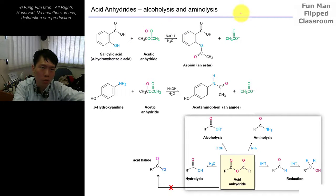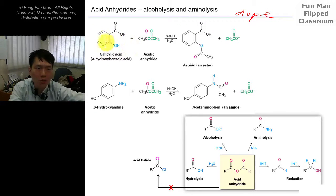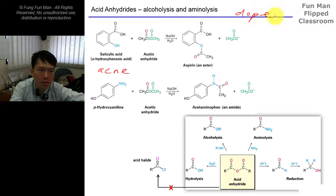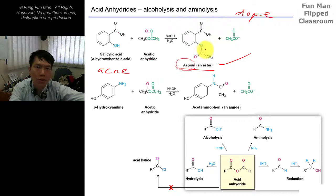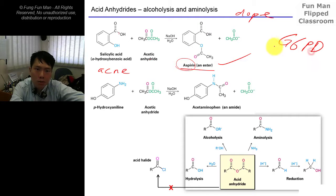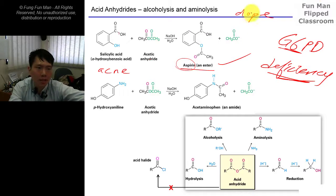This is again very similar - you try to dope it again. You put salicylic acid, which is found in a lot of facial creams and acne-reducing agents. This is also used to make aspirin. You throw in some acetic anhydride, you get the ester, which is what some of us consume. We have aspirin for migraines. But of course, if you have G6PD - glucose-6-phosphate dehydrogenase deficiency - please do not consume aspirin. It's not good for your health or your blood.